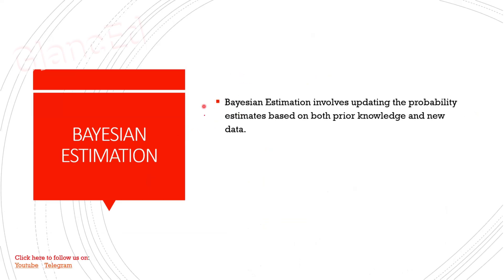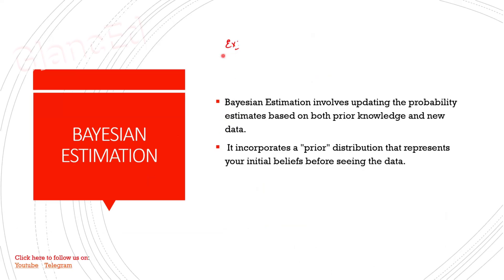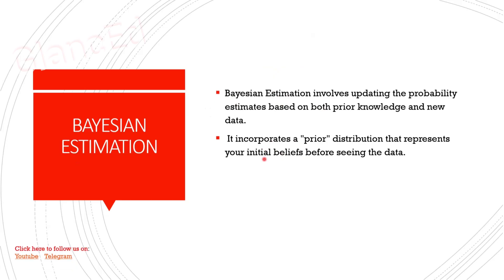For Bayesian Estimation, take the same weather prediction example. In MLE we predicted weather based only on previous data, but in Bayesian Estimation we predict based on previous data plus new data. The new data is the current weather conditions — whether it is cloudy, sunny, etc. By combining previous data with this new data, you estimate the parameters.